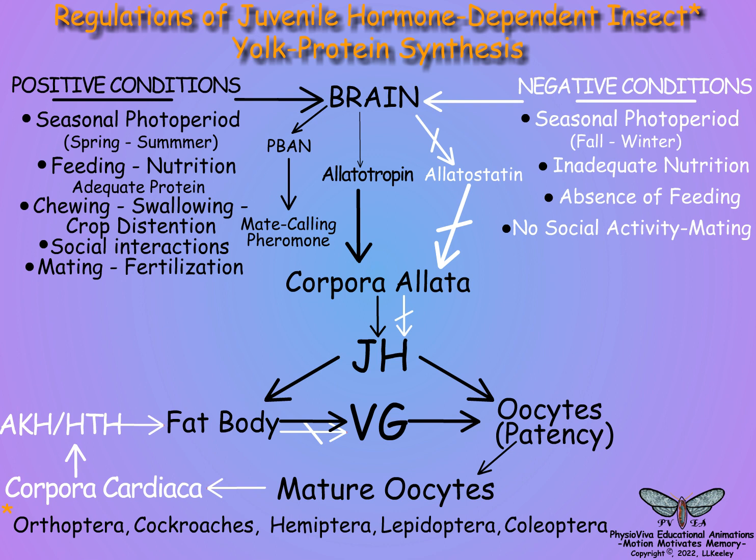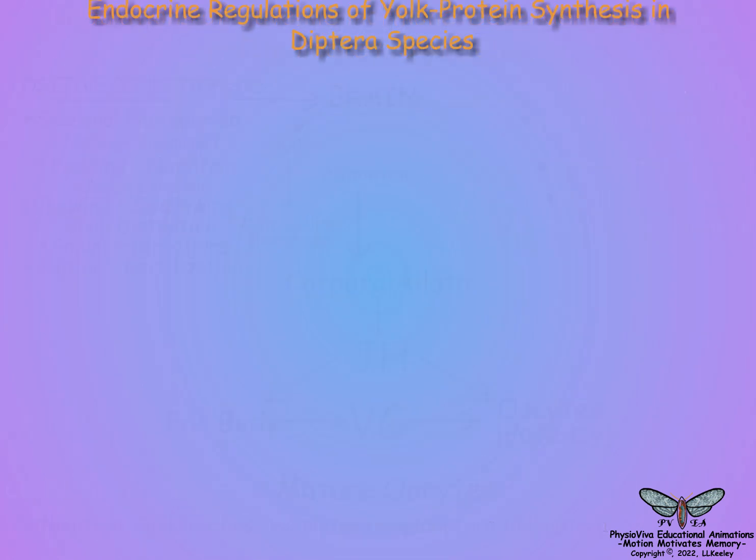In Lepidoptera, which synthesize vitelogenins prior to adult ecdysis, and in Diptera, especially hematophagous species such as mosquitoes, regulatory processes are more complex with additional endocrine stimuli. In some insect species, vitellogenesis is regulated by both juvenile hormone and ecdysteroids.